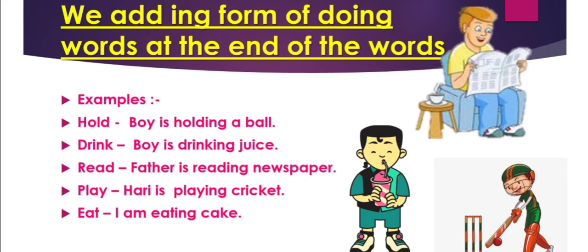For example, hold. Boy is holding a ball. Boy ne ek ball ko hold karke rakha hua hai. Haath mein pakda hua hai. Drink. Drink is a doing word. And with -ing how we can use? Boy is drinking juice. Boy juice drink kar raha hai. Then, read. Father is reading newspaper. Father newspaper read kar rahe hai. Then, play. Hari is playing cricket. Hari abhi cricket khel raha hai. It is happening now. Then, eat. I am eating cake. This way, we can use -ing form of doing words.